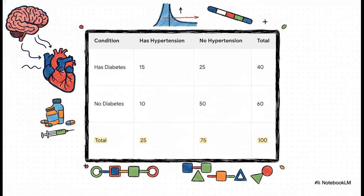To really see this in action, let's look at some data. Here's a table from a study of 100 people looking at who has diabetes and who has hypertension. Now, look closely. See the total number of people with hypertension? It's 25. And out of those 25 people, 15 of them also have diabetes. Keep those two numbers, 25 and 15, in your head.